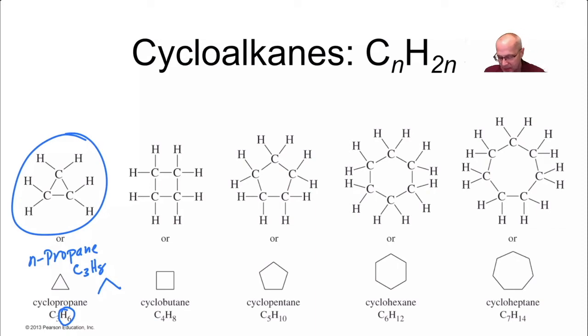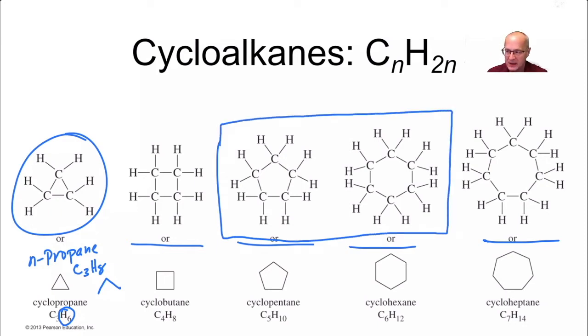Okay. Then cyclobutane, cyclopentane, cyclohexane, cycloheptane. Now, by far the most common ring systems we see in nature are pentane and hexane. But the other ones do exist. There's probably examples of every cyclical molecule out there from extraordinarily large all the way down to cyclopropane.